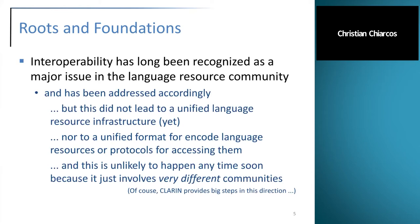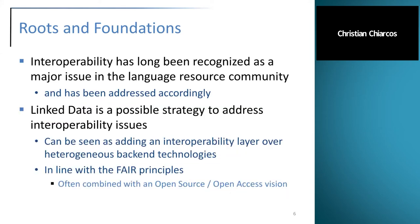Given the current state of affairs, it's actually unlikely that full unification will happen anytime soon, because it involves very different and very distributed communities. CLARIN provides major steps in this direction, but there's still some way to go. Today we're going to talk about one possible strategy to address such interoperability issues — it's not the only strategy, but it's a prospective direction to take.